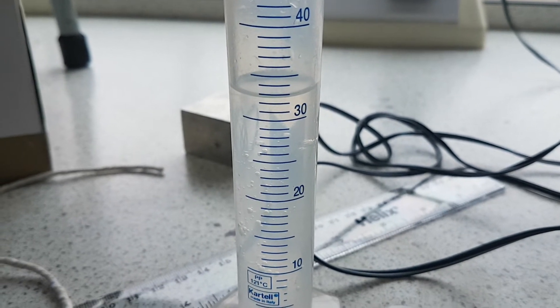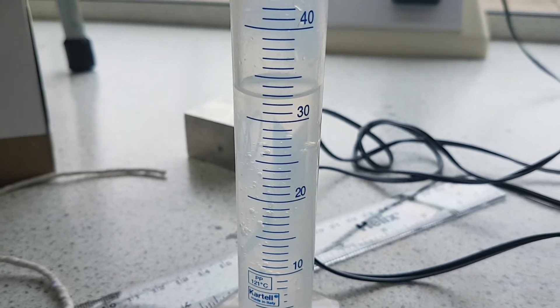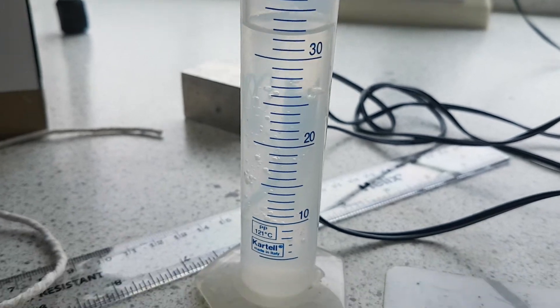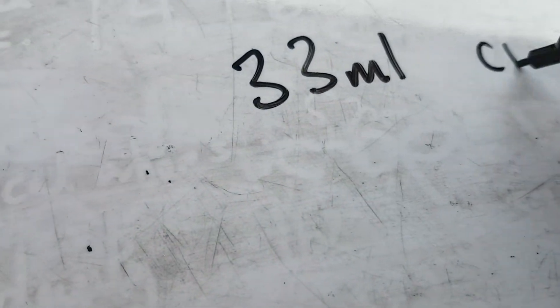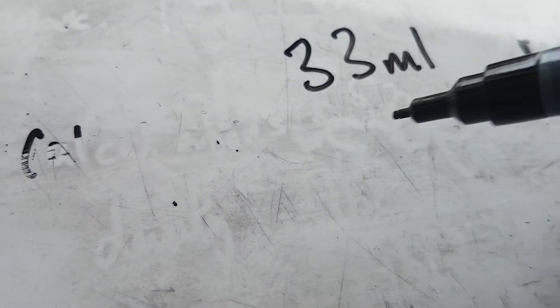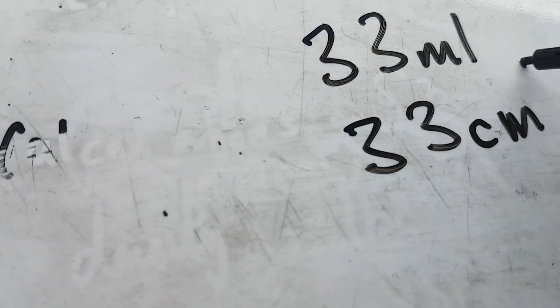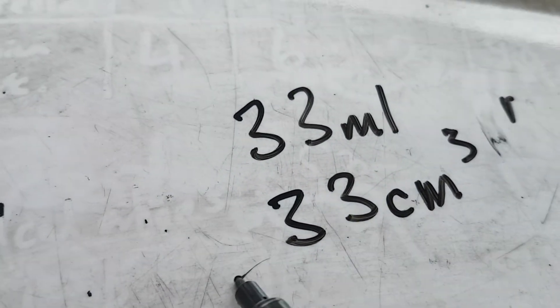So with the help of Miss Moore, we've managed to collect 33 mils of water. Now 33 mils of water is the same thing as saying 33 centimeter cubed of water. So that's 33 centimeter cubed of water. So that's our volume.